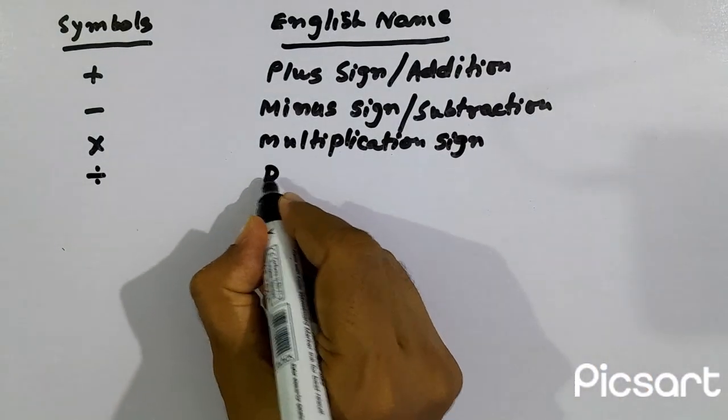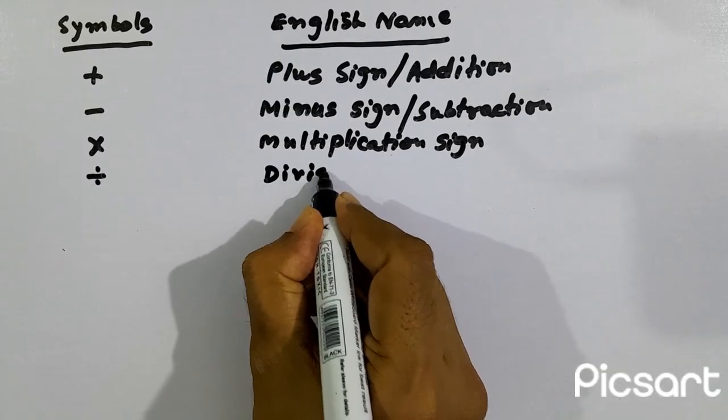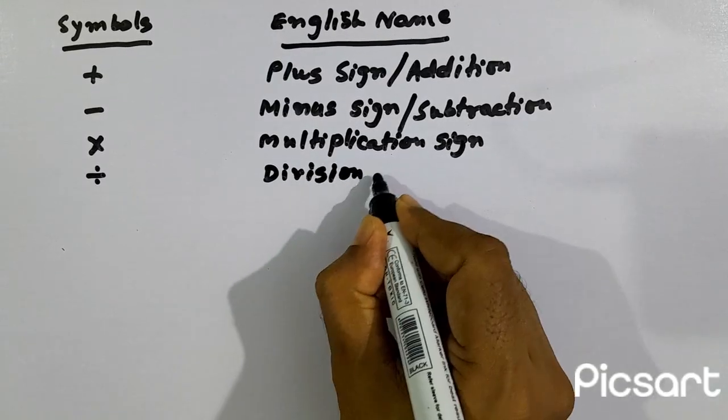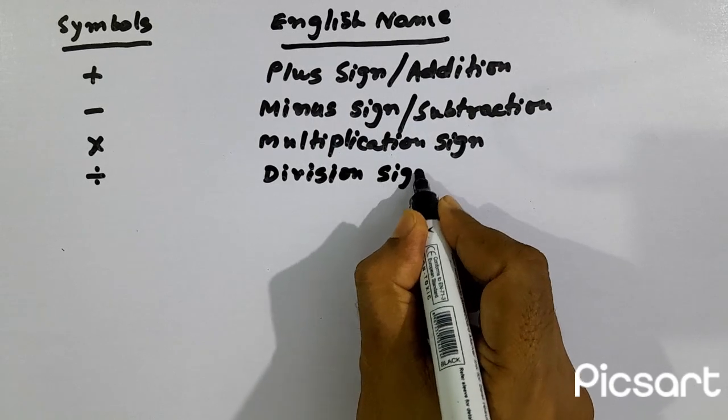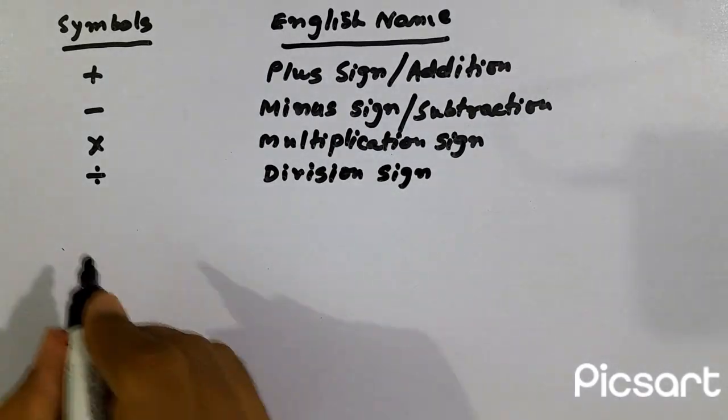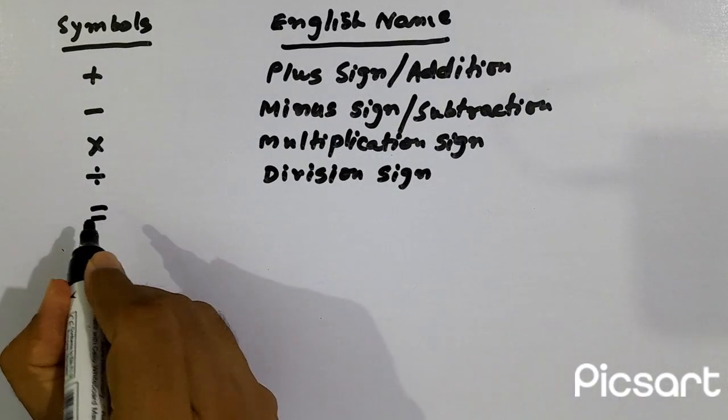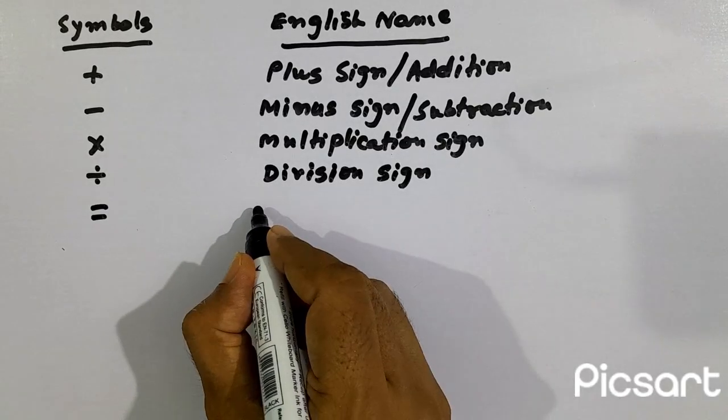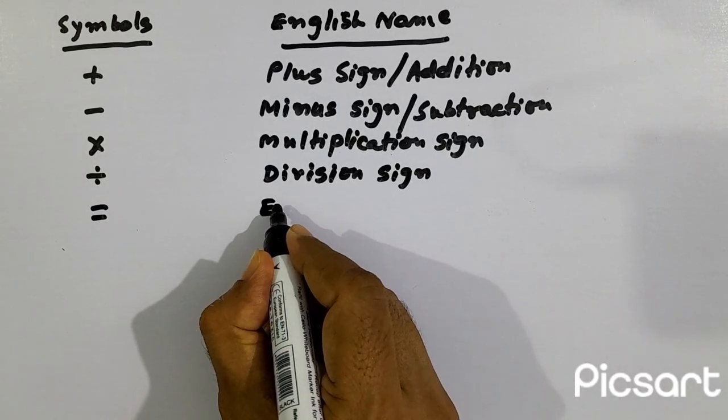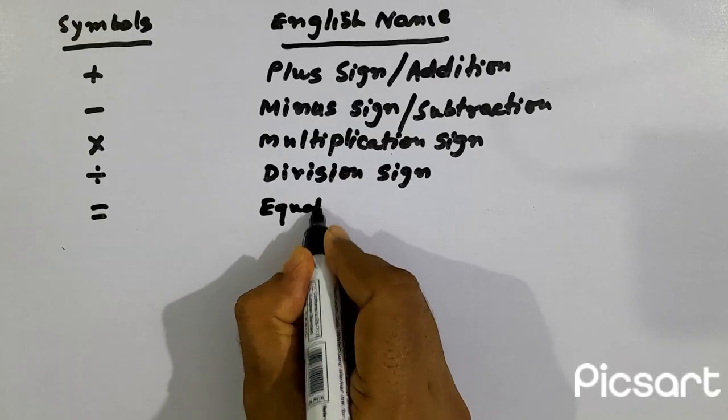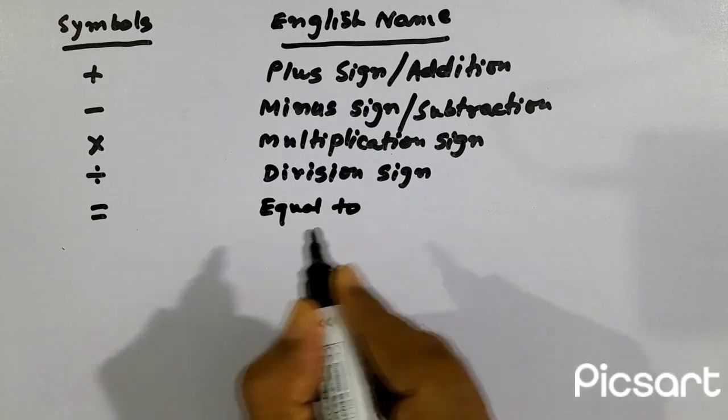This symbol is known as division sign. This is called equal sign, equal to.